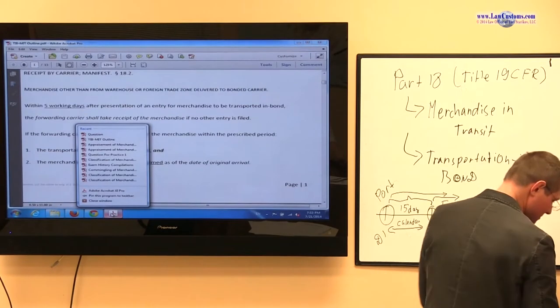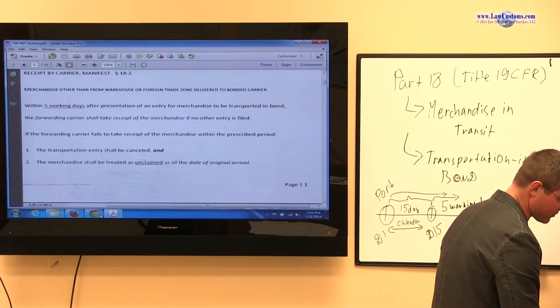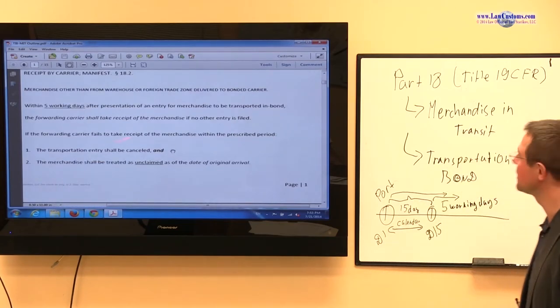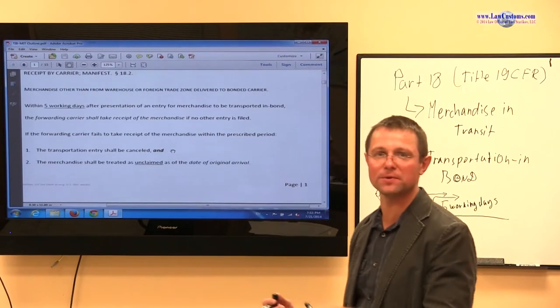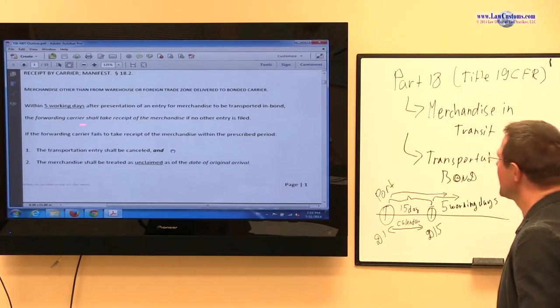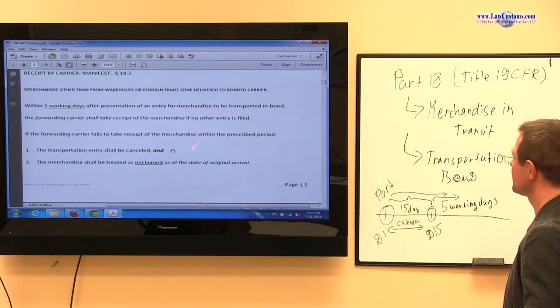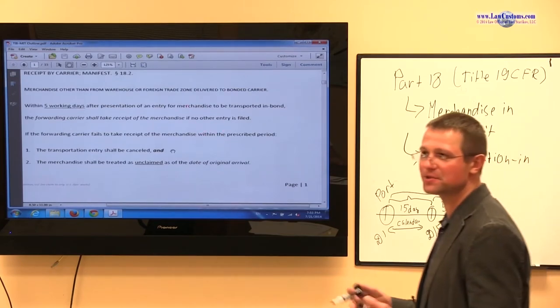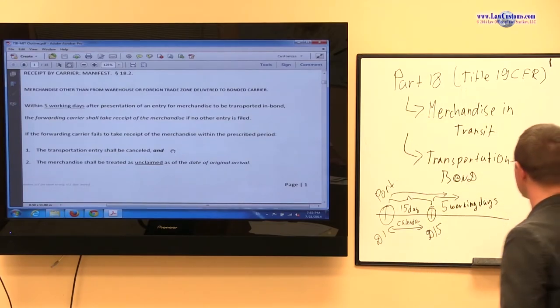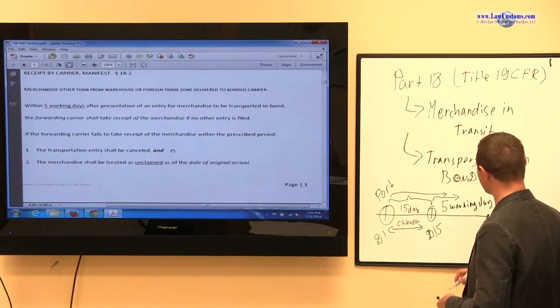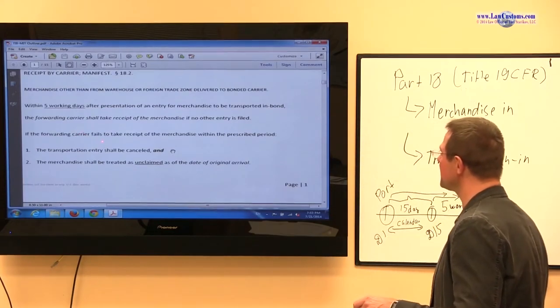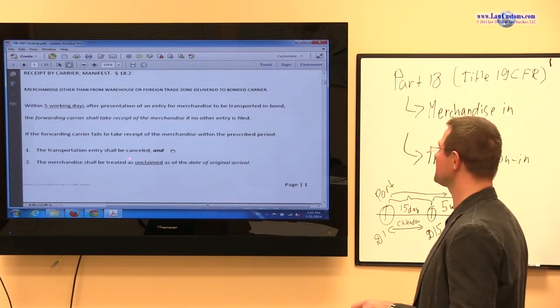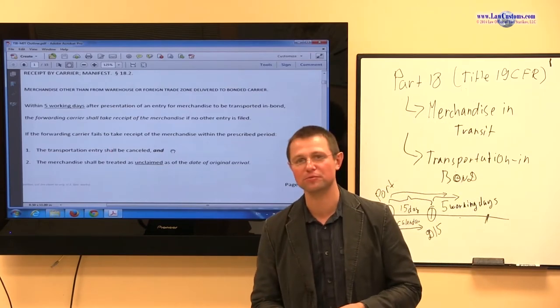That means within five working days of a presentation of an entry, that little form we mentioned, a carrier, like a truck driver or railroad company or ship going around through the Panama Canal, they must take receipt of merchandise. Of course, if no other entry is filed, such as a consumption entry. If the carrier doesn't do that, then the entry is cancelled and merchandise will be treated as unclaimed.